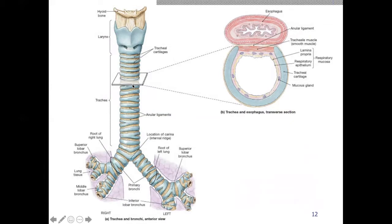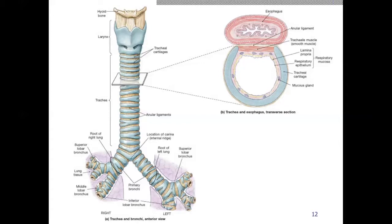I want you to notice that the cartilage making up the trachea is C-shaped, leaving the back open. A couple of reasons: first, if anything happens to travel down the trachea that isn't supposed to, there's muscle set up there so it can expand into the area where the esophagus is, preventing things from getting stuck in the hard cartilage. Similarly, as we swallow a large bolus of food, it can stretch slightly into the tracheal space as it goes down the esophagus. All cartilages in our trachea are C-shaped.